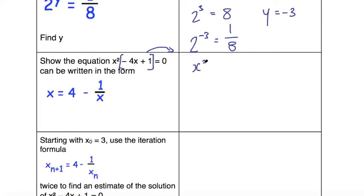So my next line of working will be x² = 4x - 1—the signs there have changed because I've brought that over to the right-hand side. And then I want to divide everything by x because I've got this x², which is like x times x, so if I just want one x by itself on the left, I need to divide everything by x.